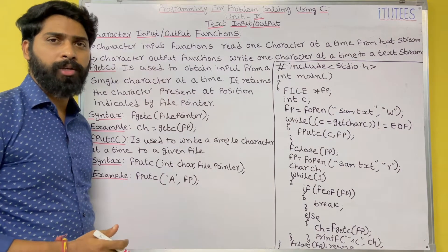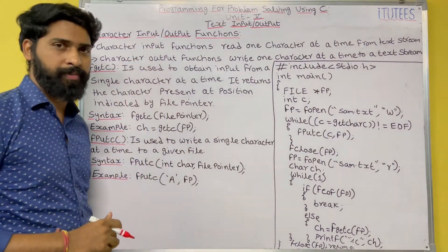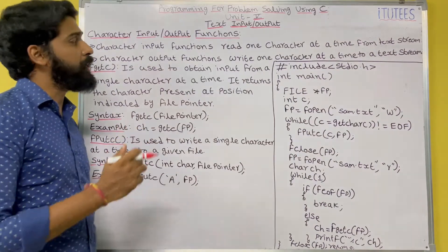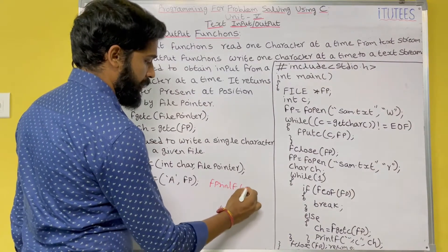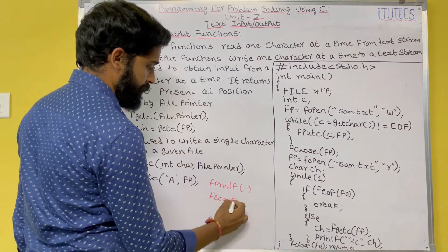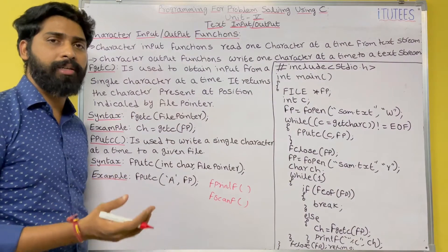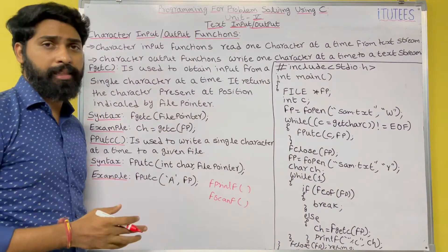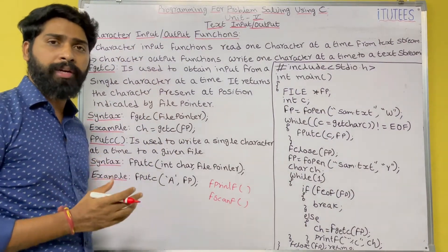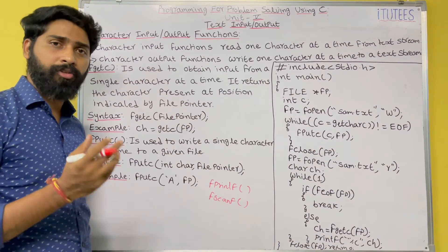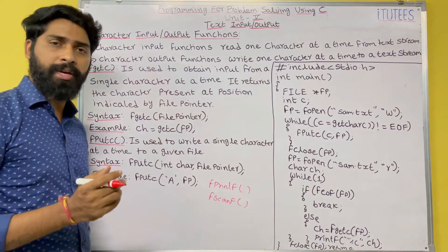Hello friends, welcome to C programming tutorials. In this class we are going to learn about character input output functions. Last class we discussed about formatted input output functions — fprintf and fscanf — which we used to read data from a file and write data to a file. Now in this class we are going to learn about character input output functions: how to read data character by character from a file and how to write data character by character to a file.